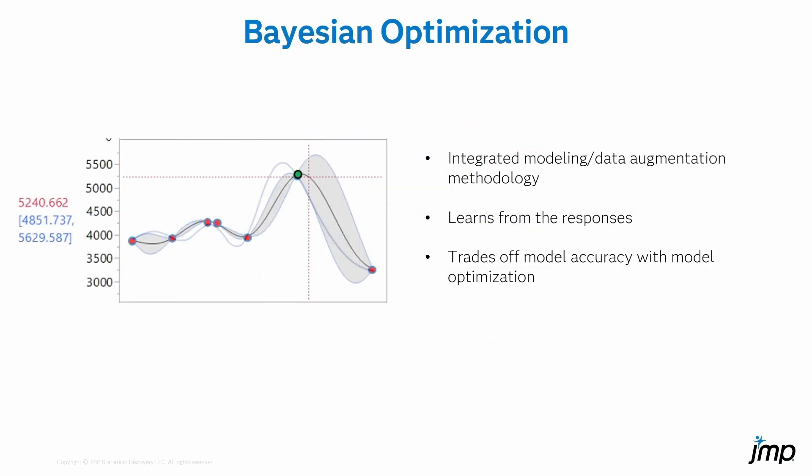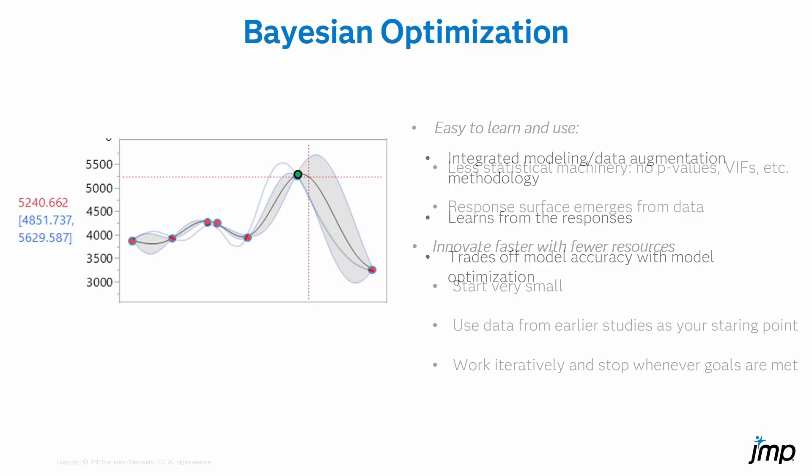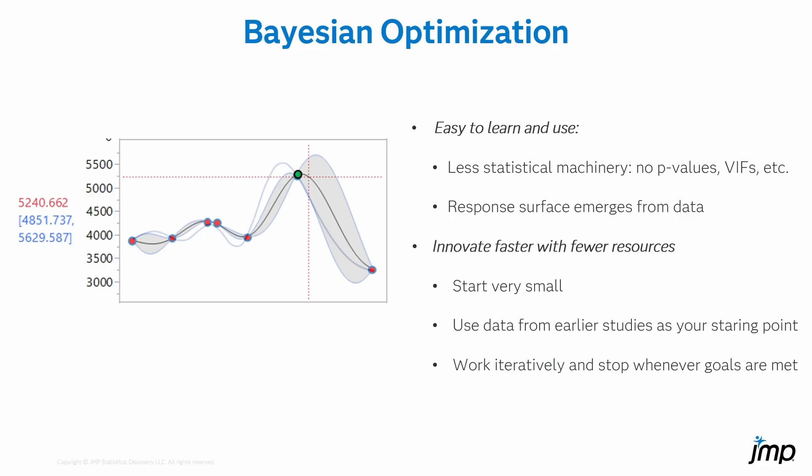The framework that makes that possible is called Bayesian optimization — an integrated modeling and data augmentation scheme that learns from the responses as we acquire more information. The name sounds fancy, but the barrier to entry knowledge-wise is a lot lower than you might think. There are no hypothesis tests, no p-values, and no need to specify interactions or curvature terms, because the response surface emerges directly from the data itself.